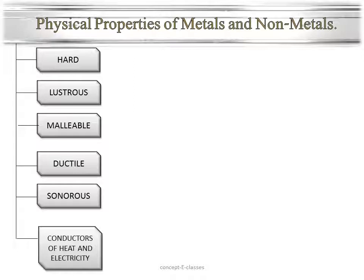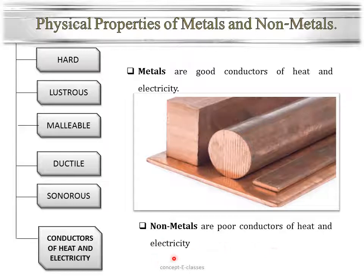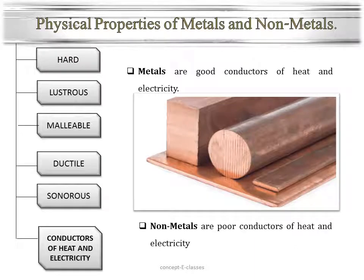The last physical property is that metals are good conductors of heat and electricity. For example, if you take a metallic pan without a plastic or wooden handle and use it for cooking, you will get hurt as the metal conducts heat. Therefore, plastic handles protect us while handling hot things. Similarly, a screwdriver has a plastic handle to protect us from electricity conducted through the metal. Whereas nonmetals are poor conductors of heat and electricity. So metals are hard, lustrous, malleable, ductile, sonorous, and conductors of heat and electricity, while nonmetals do not have any of these characteristics.